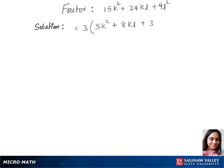Now we can find factors for 5k square and 3l square. For 5k square, we have 5k times k. And for 3l square, we have 3l times l.